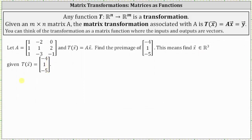So for the transformation, we know matrix A times the unknown vector x, which is in R3 and therefore has three components x1, x2, x3, must equal the output or the image, which is the vector negative four, one, negative five.